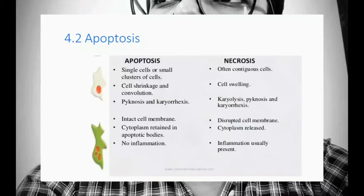The next application is apoptosis. Before moving on, you need to know what apoptosis and necrosis are. Apoptosis is programmed cell death, while necrosis is cell death due to external stimuli. In apoptosis, you see single cells or small clusters of cells affected, whereas in necrosis you often see contiguous cells involved.